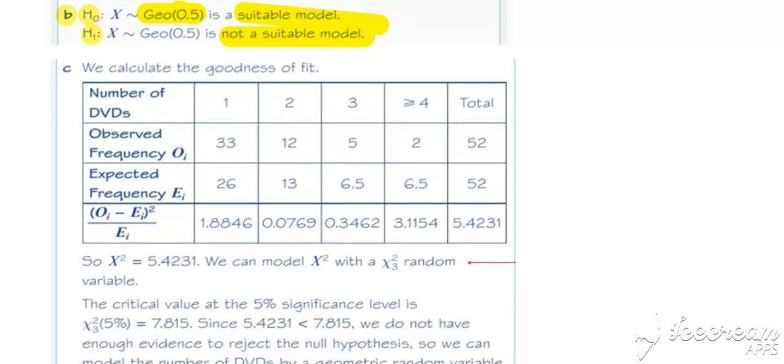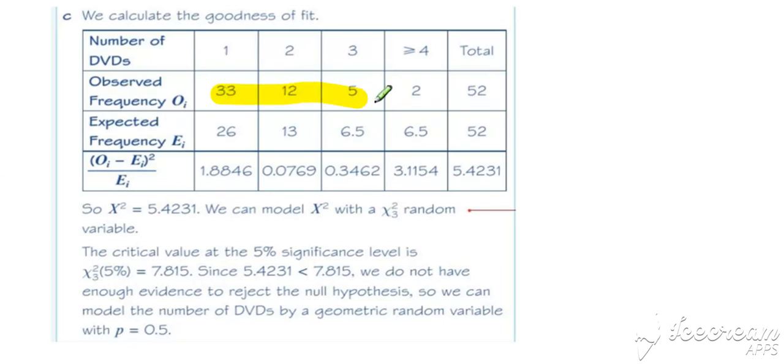And then once we've got our observed and expected to compare, we can then conduct our usual goodness of fit test. Notice that these expected are both greater than 5, so our degrees of freedom is going to be 4 cells take away 1, so 3 degrees of freedom. And then we've calculated our goodness of fit stats. We've got our critical region. And so we can conclude the test in the usual way.